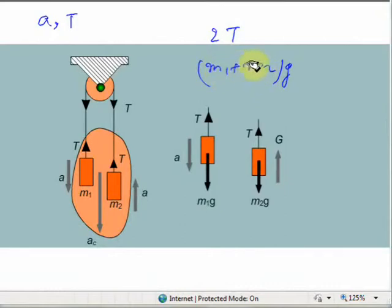So the acceleration of the center of mass will be: m1 plus m2 times g minus 2T equals m1 plus m2 times a, where a is the acceleration of center of mass, that is ac.